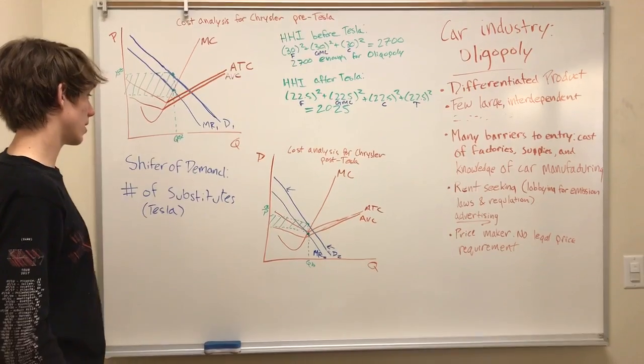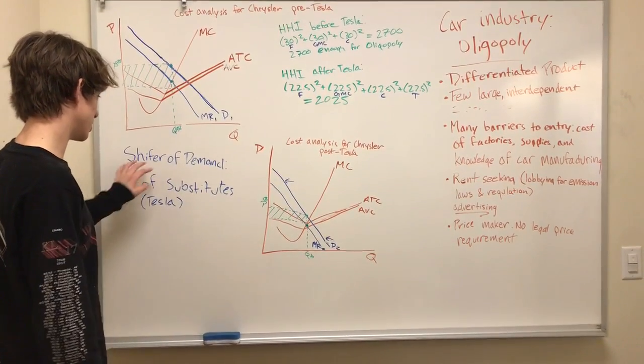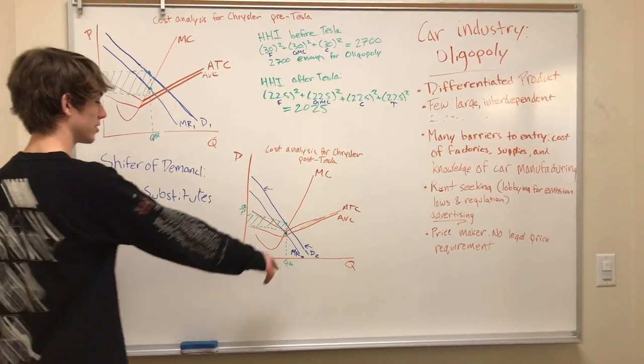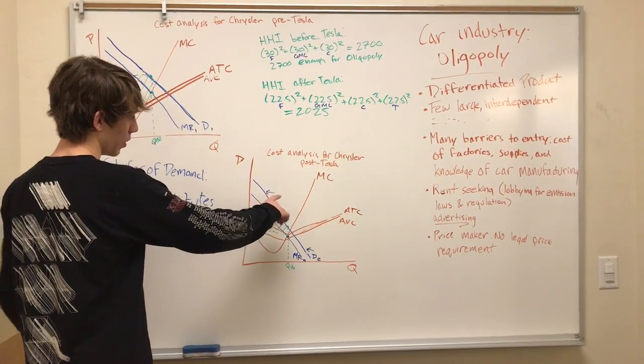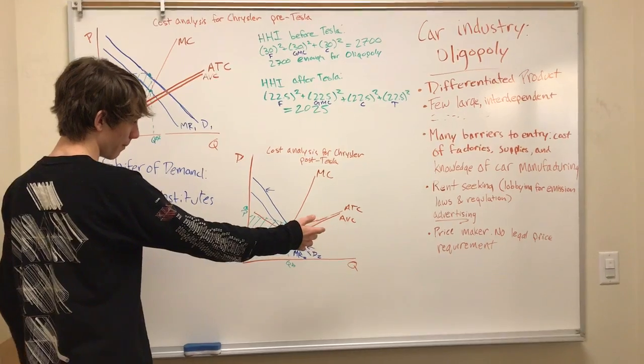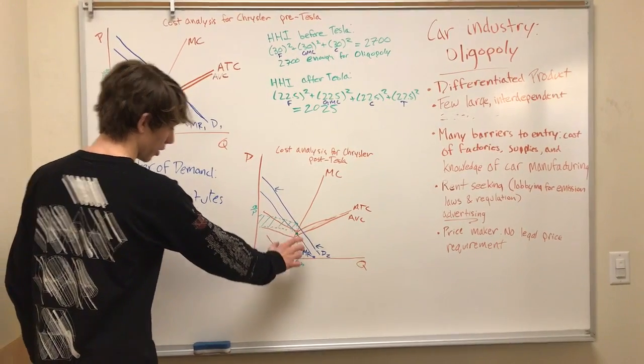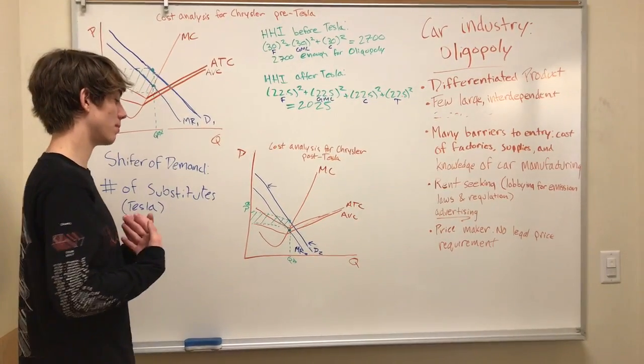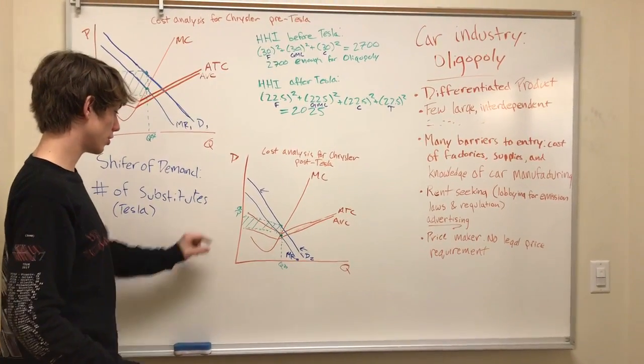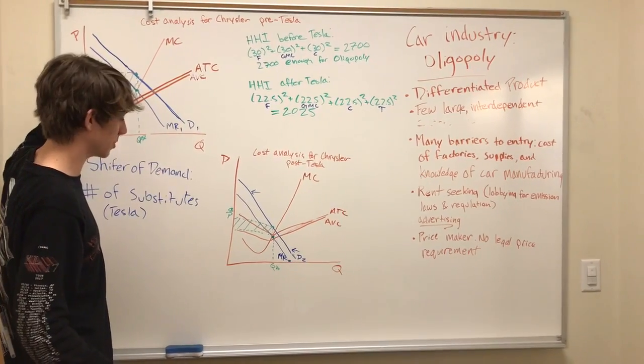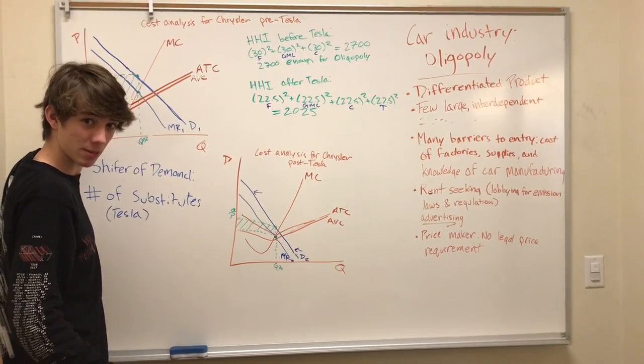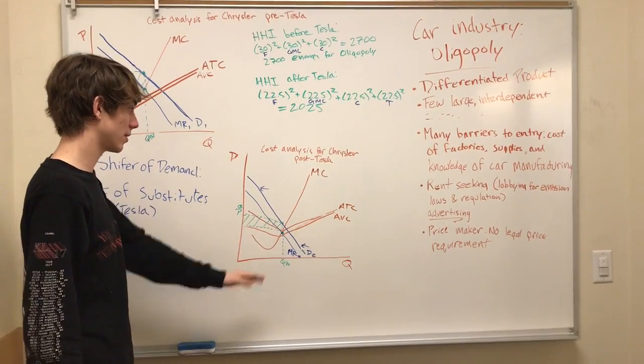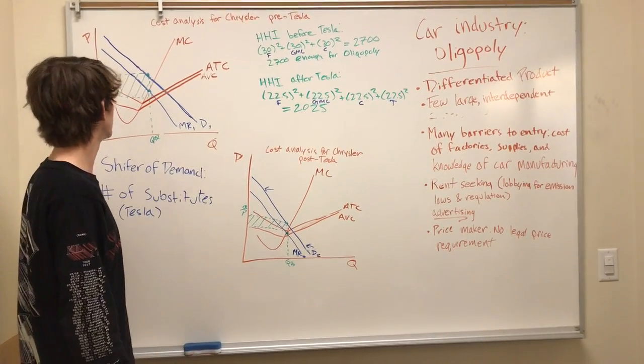Demand shifts to the left, down here, which means their Q star—the quantity they supply—goes down, and the price they charge goes down, which means the amount of money they make goes down. Their economic profit is noticeably smaller than before Tesla came into the market. It's not an economic loss yet, but they're making less than they would.